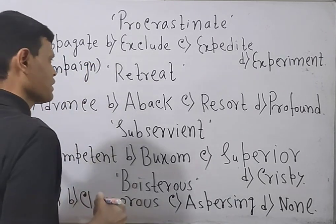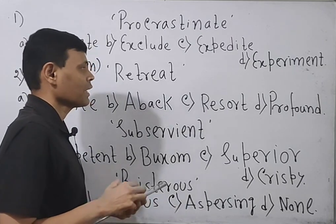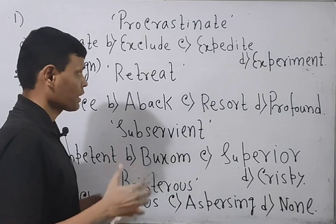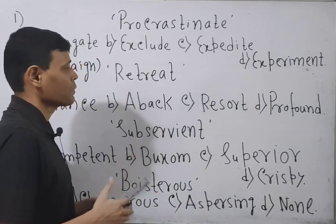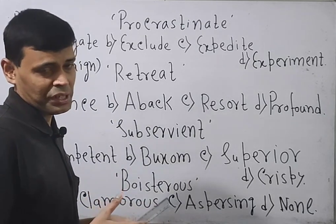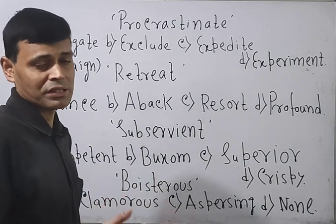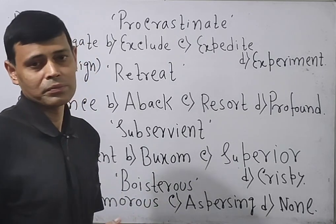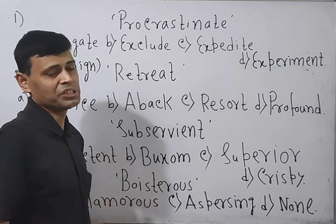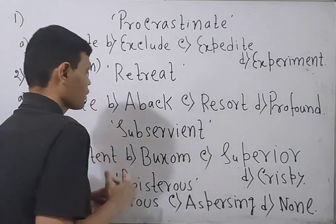Procrastinate means delay, but expedite means quicken. The related forms are: procrastination, procrastinator, and on the other side, expeditiously, etc. So both are contrary — they are antonyms of each other.